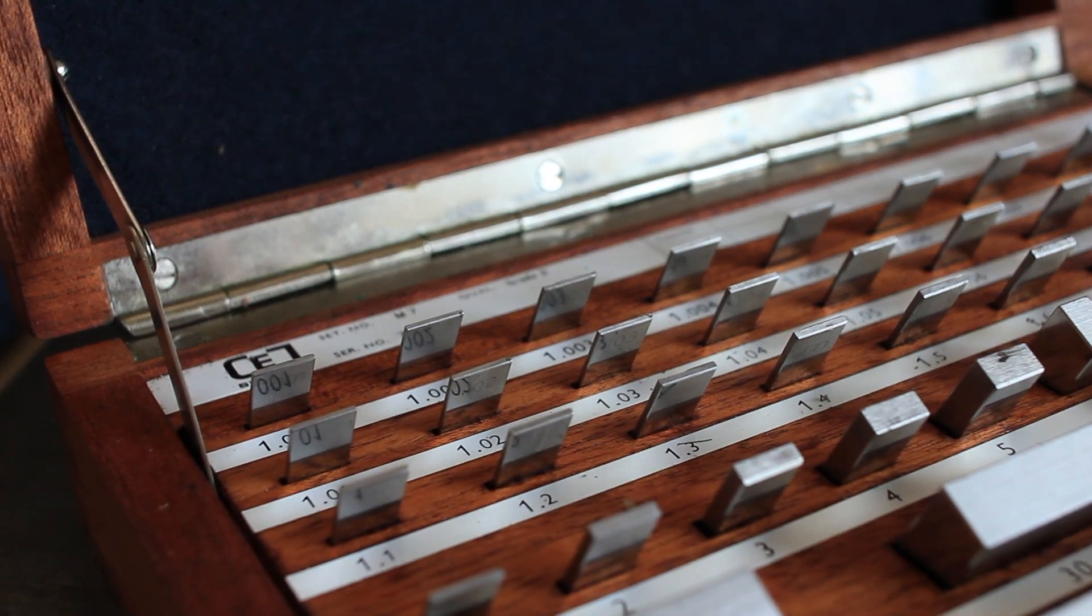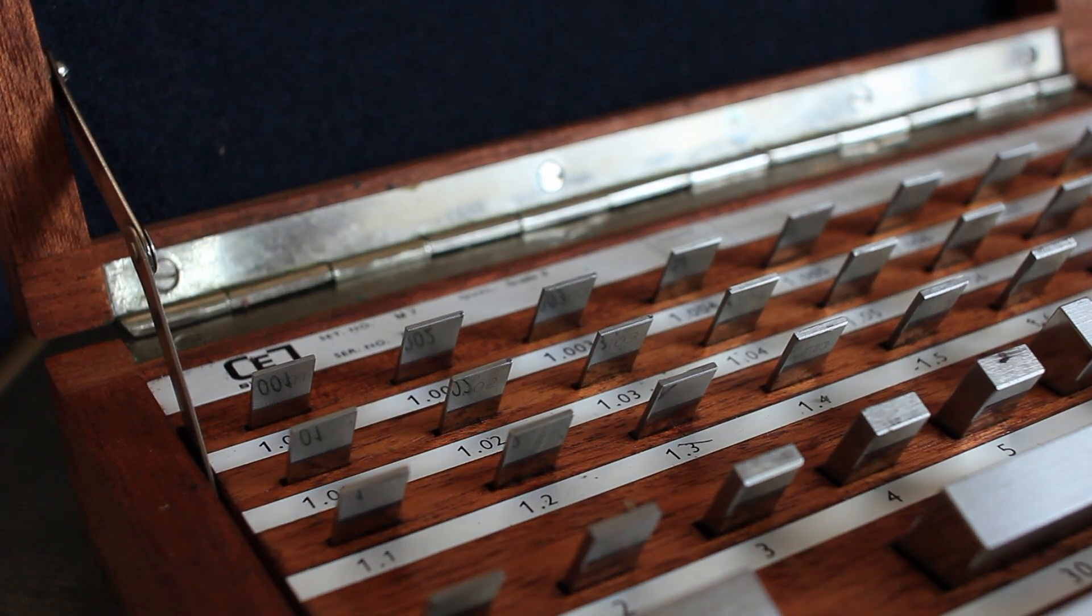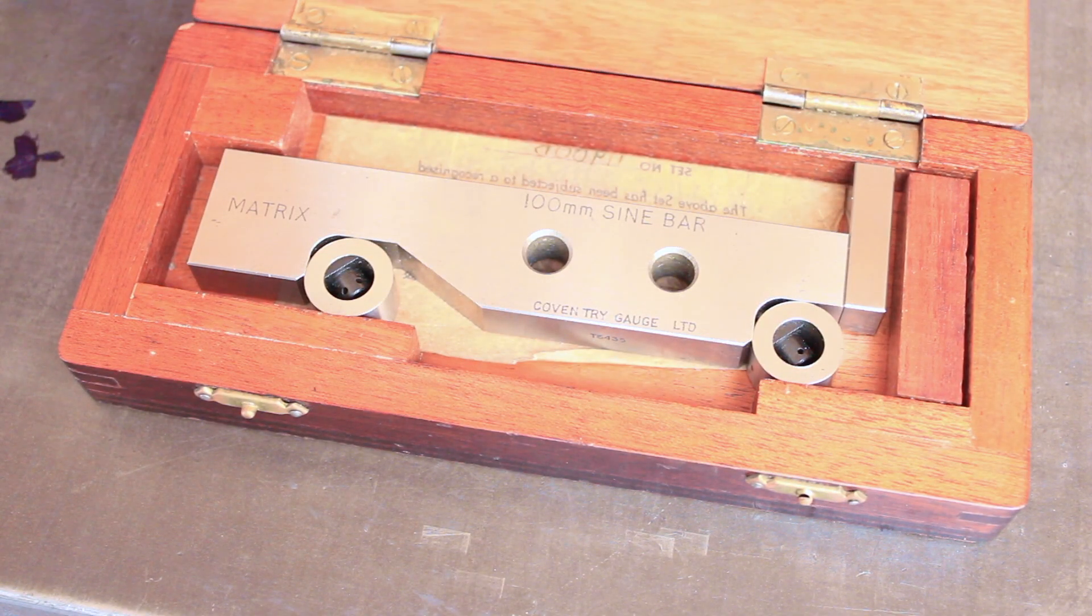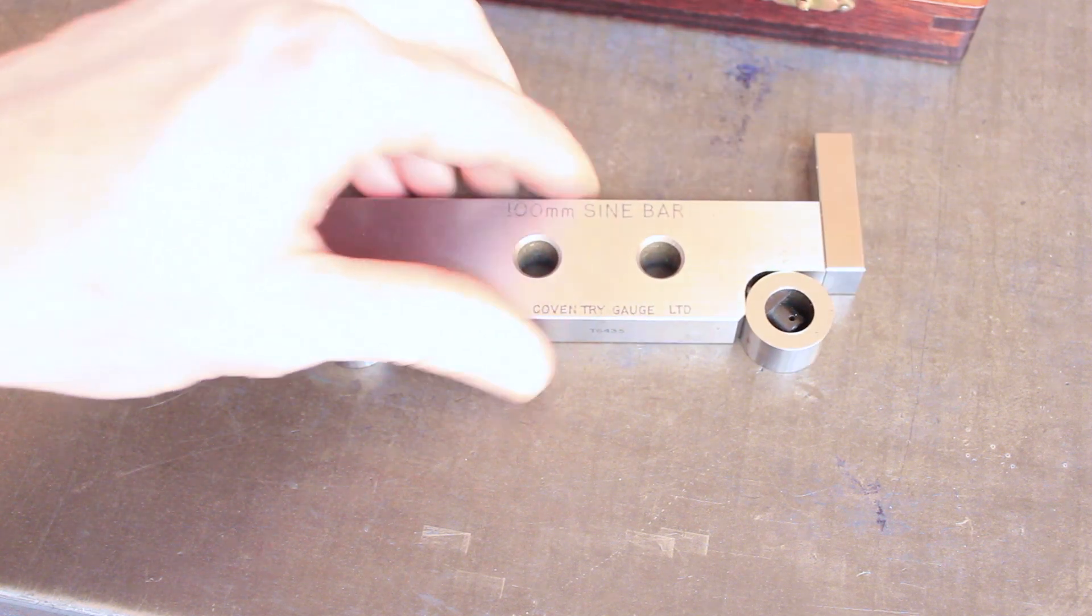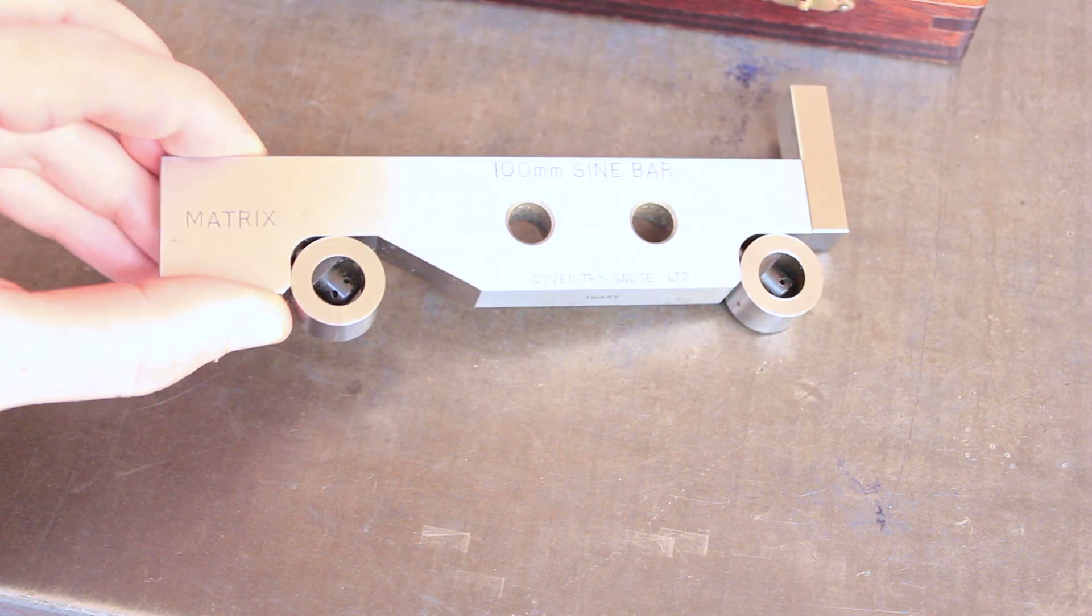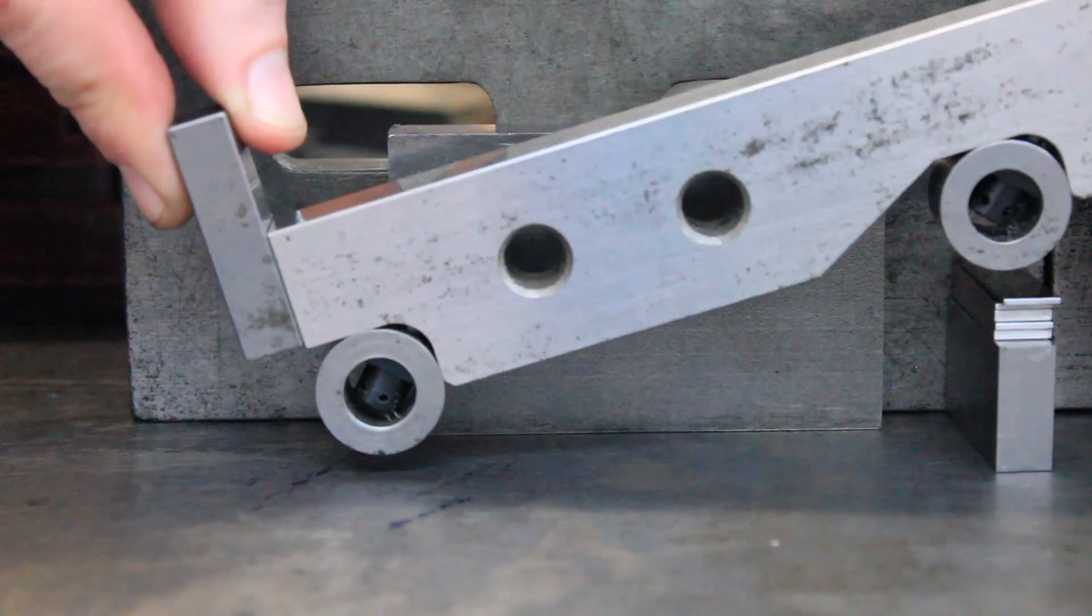To do this we're going to need a set of gauge blocks or slip gauges, and we're also going to need a tool called a sine bar. The sine bar that we'll be using is a 100 millimeter metric sine bar that's going to allow us to measure the angle.